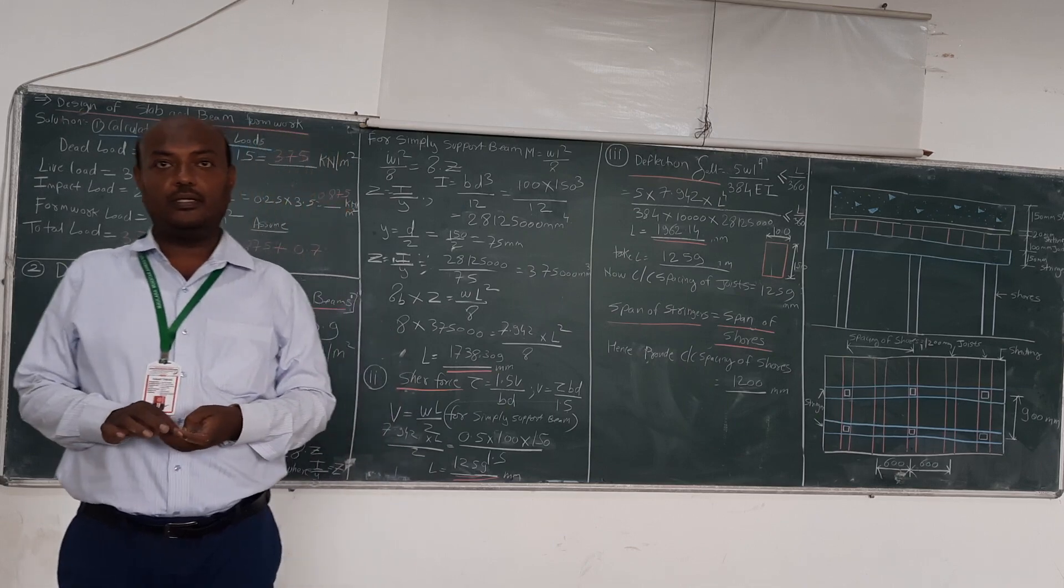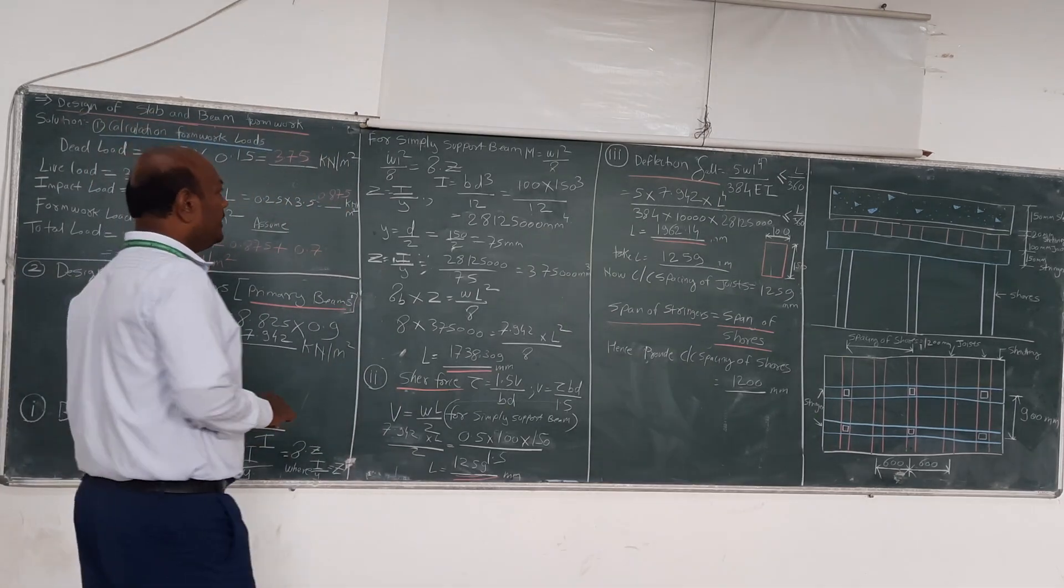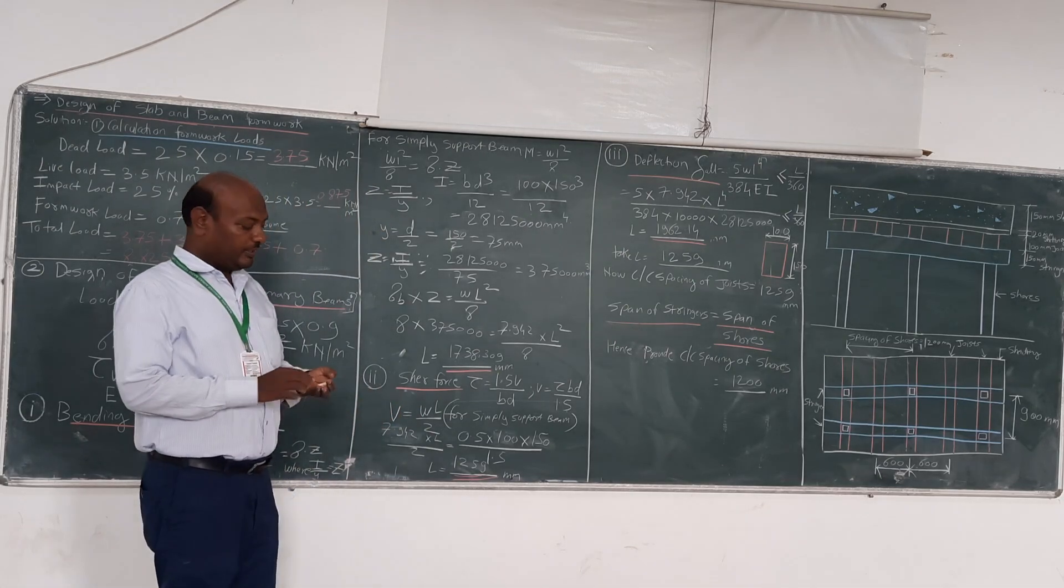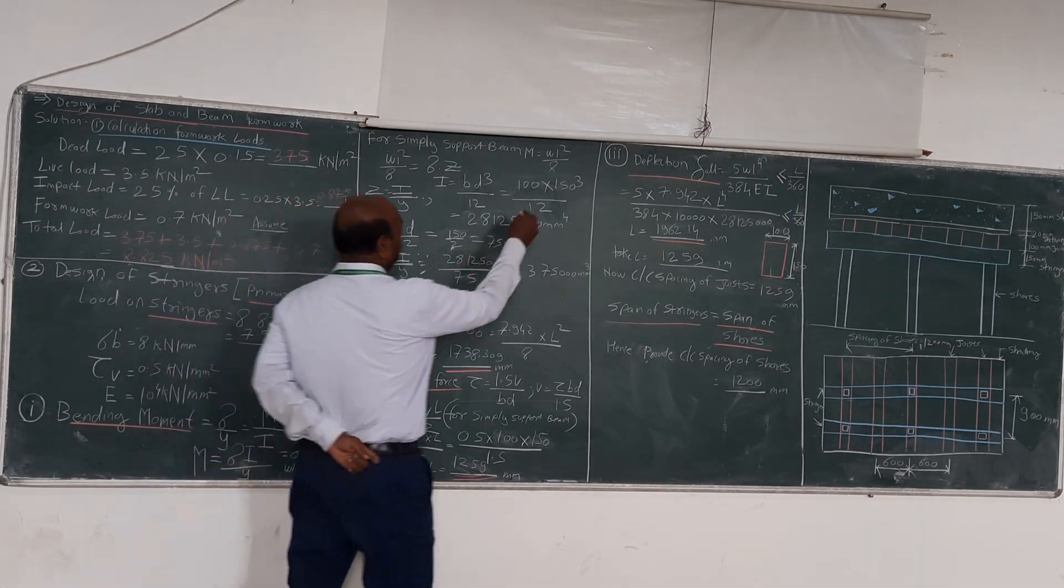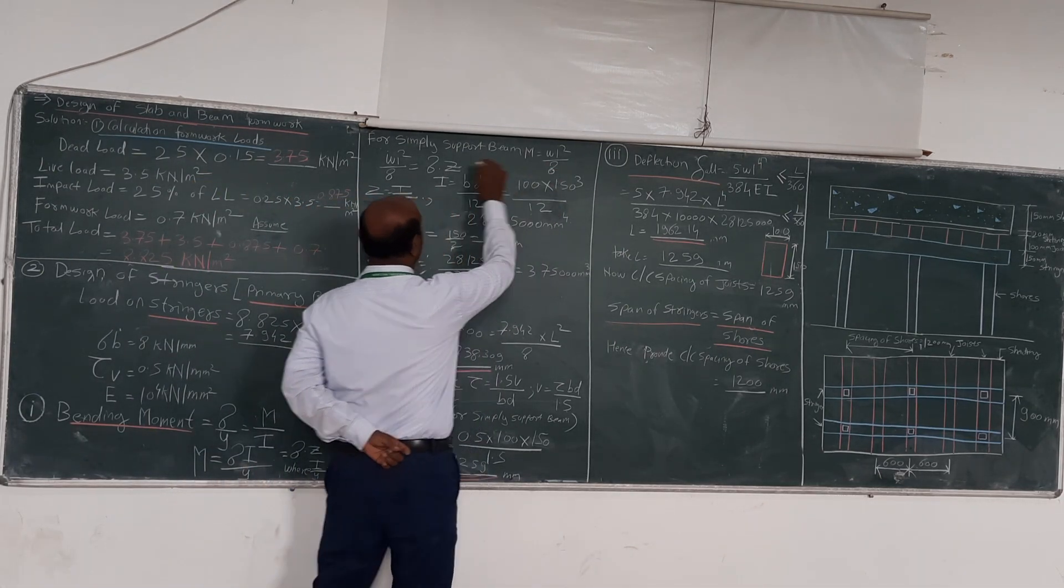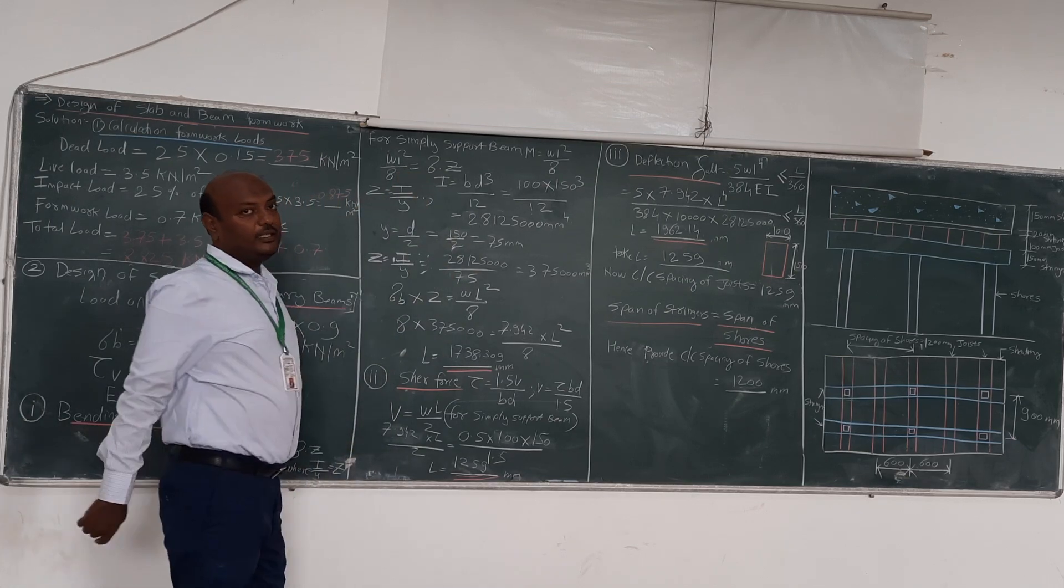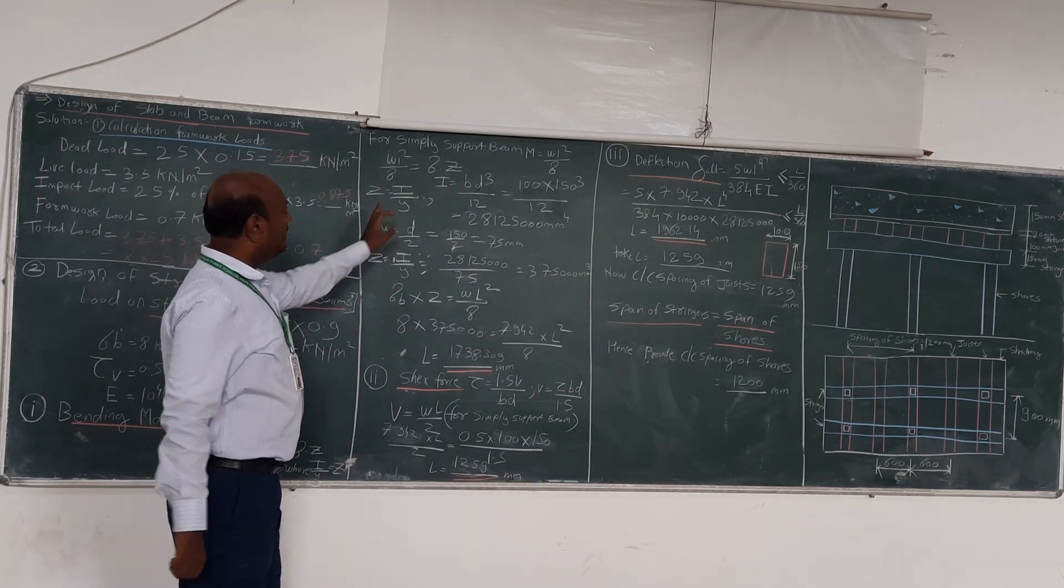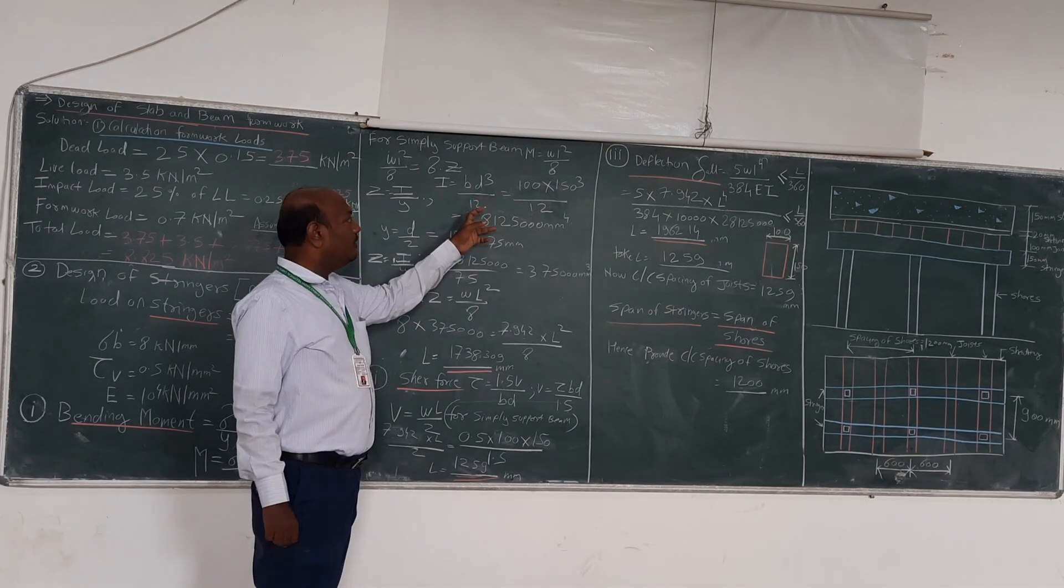That is why the moment formula we are using is only because of simply supported, where M is equal to wL squared by 8. So wL squared by 8 is equal to sigma Z. Now we will find out Z, that is I by y.